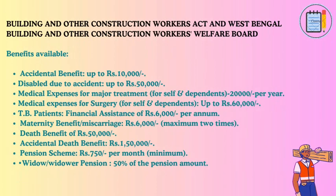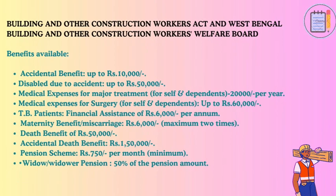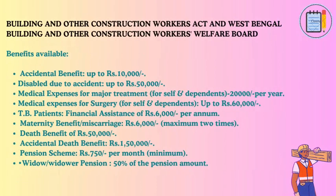West Bengal Building and Other Construction Workers Welfare Board benefits: accidental benefit up to 10,000 rupees; disability due to accident up to 50,000 rupees; medical expenses for major treatment (self) up to 20,000 rupees per year; medical expenses for surgery (self) up to 60,000 rupees; TB patients financial assistance 6,000 rupees per annum; maternity benefit/miscarriage 6,000 rupees (maximum two times); death benefit 50,000 rupees; accidental death benefit 1,50,000 rupees; pension scheme 750 rupees per month minimum; widow/widower pension 50% of the pension amount.